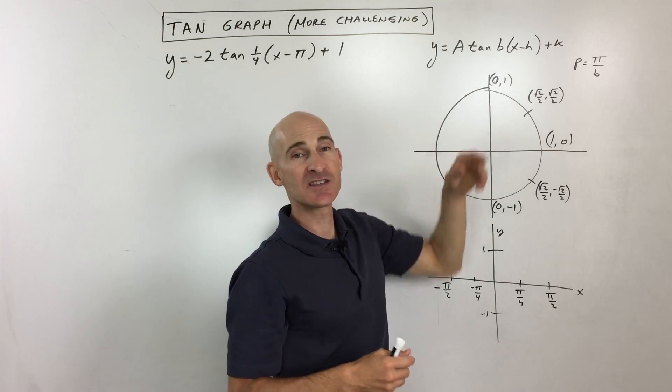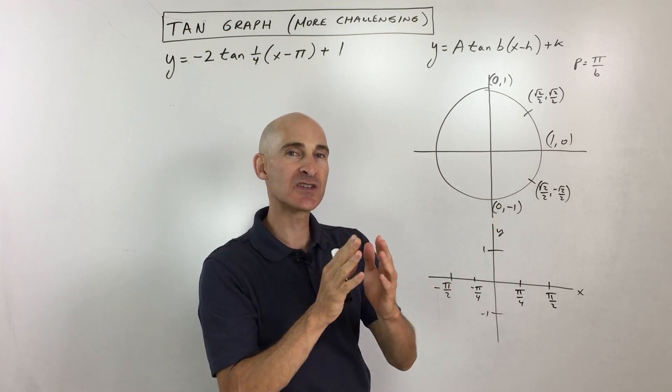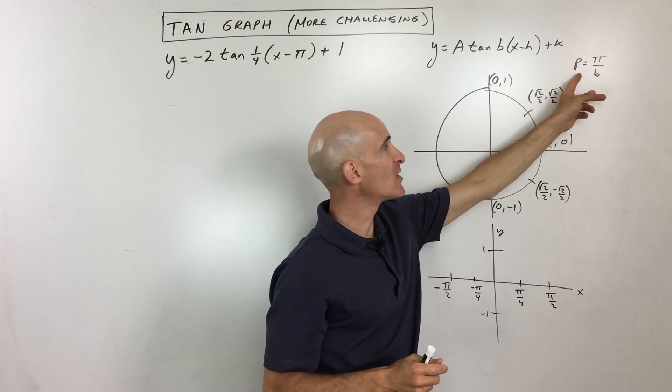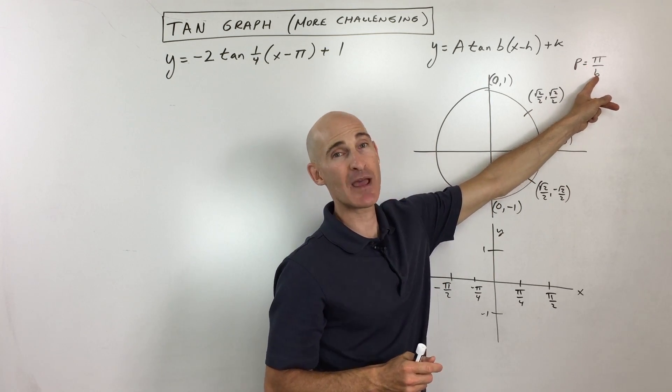And then what this b value does is it affects the horizontal stretch or compress, basically affecting the period. And we can use this formula right here. Period equals pi divided by b.